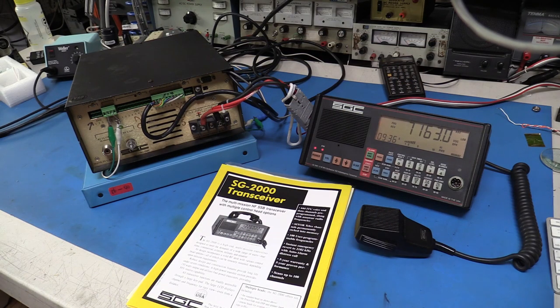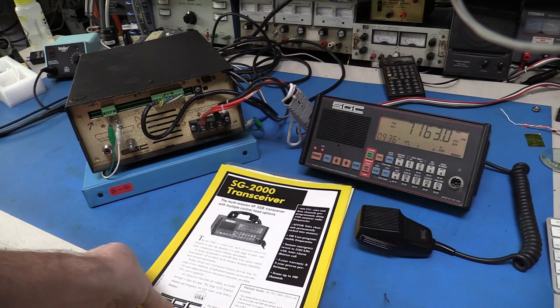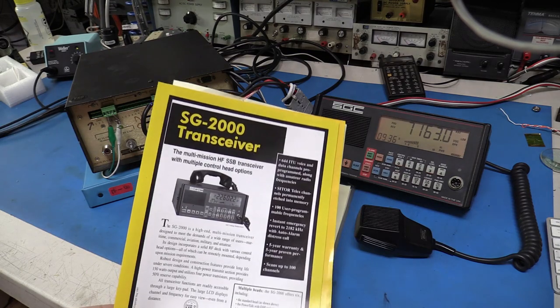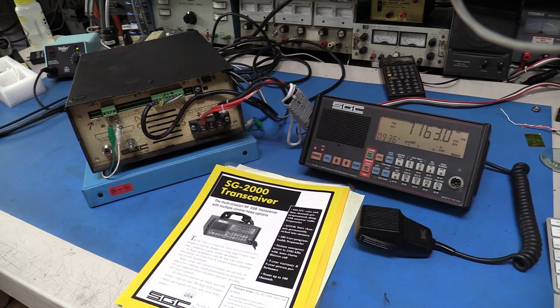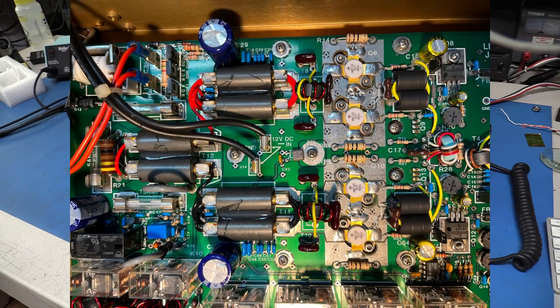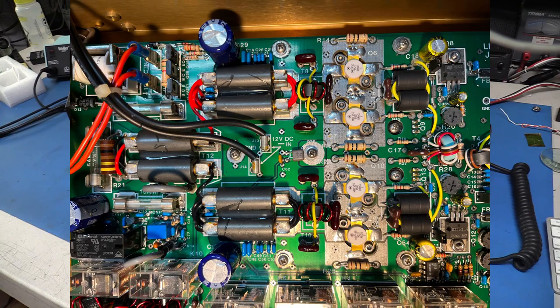Hello, this is W6EL and today I want to show you an interesting radio from the SGC company made in the mid-90s. The model number is SG2000. As the brochure says, this is a sideband transceiver for HF. It covers 1.6 all the way up to 30 megahertz. Output power is an easy 150 watts from four MRF455 transistors. Capable significantly more, so it's nicely derated.